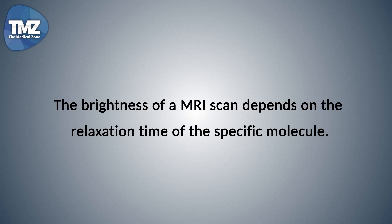So faster proton realignment will create a brighter image. The magnetic properties can therefore be used to tell the difference between various types of tissues.